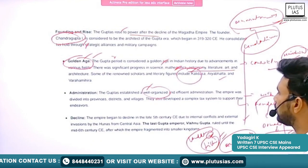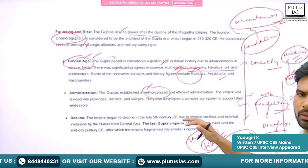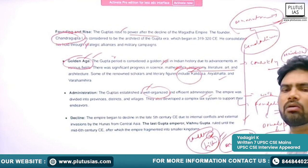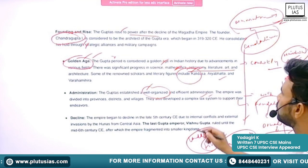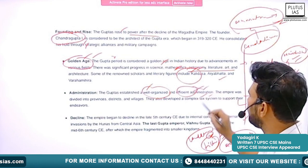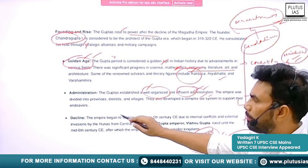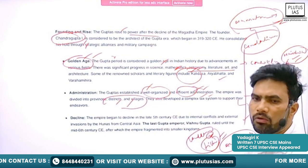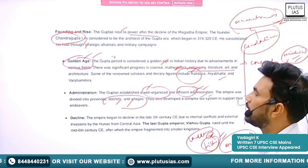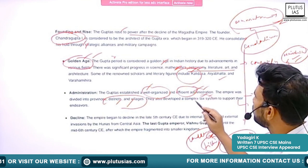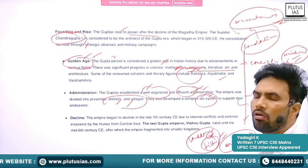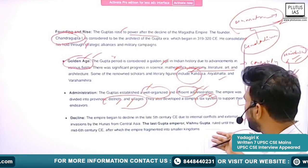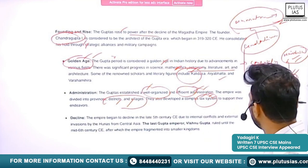So a hint of feudal system is visible in the Gupta age. They also provided an efficient administrative system. The empire was divided into provinces, districts, and villages — the vocabulary for which we will see later in this lecture — and they also developed a complex tax system.